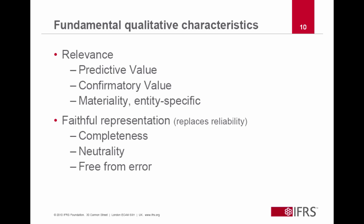The third component is freedom from error. The chapter notes that this is an ideal to which we strive — it will never be totally free from error. But faithfully represented information is free from error, and therefore the closer we can come to this ideal, the better the information will be.